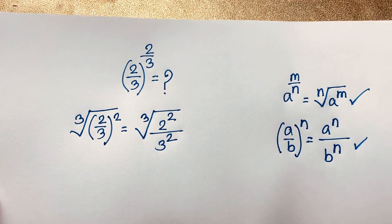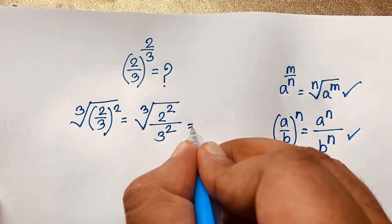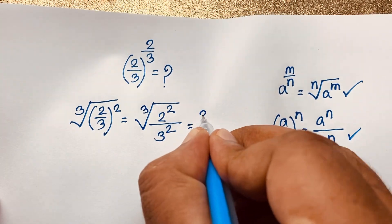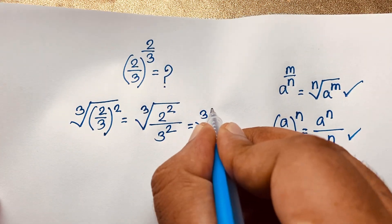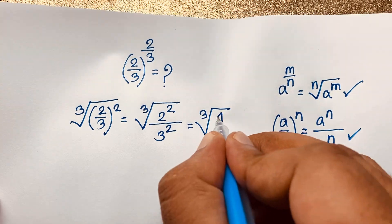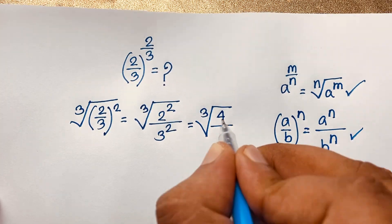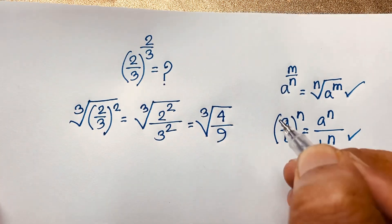Here n is 2. Now, you can easily see it will be the cube root of 2 to the power 2, which is 4, over 3 to the power 2, which is 9.